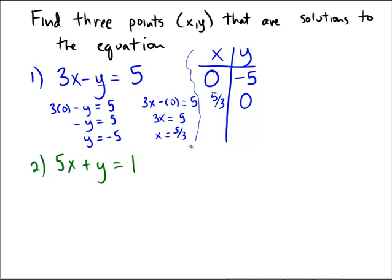So this time we get the answer of five-thirds comma zero. Now let's say we had to choose something else. I said specifically three points, so I'm just going to have to choose a point to make this work.